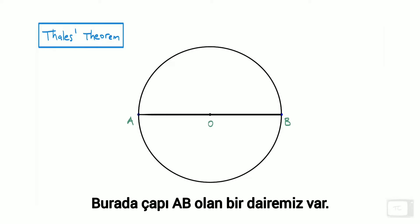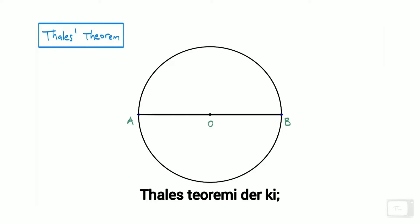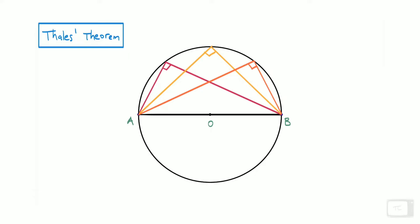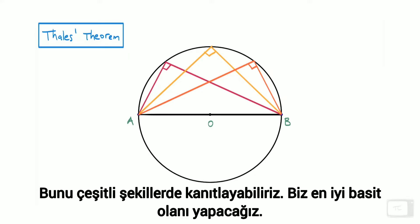We've got a circle with diameter AB. Thales' theorem says that if we inscribe a triangle, putting the third point on the circle somewhere, we're always going to get a right angle. We can prove this in a number of ways.